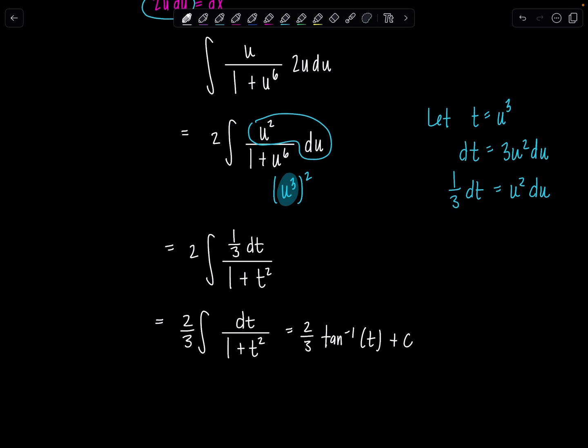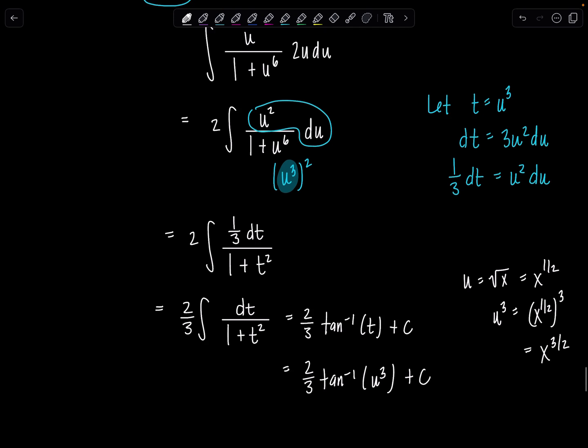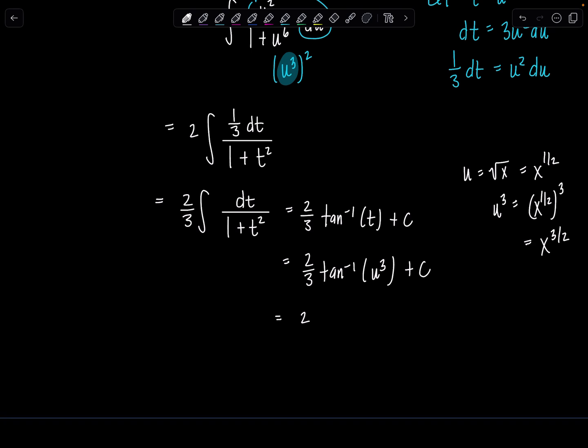And then now we have to go back to the original variable that was in the problem. So t was u cubed. So tan inverse of u cubed plus c. And then u was rad x, which is x to the 1 half power, correct? So u cubed is x to the 1 half cubed, which is x to the 3 halves. So that's how I'm going to write the final answer, just to make it all cute and pleasing. So 2 3rds tan inverse x to the 3 halves plus c. And that's the end of the problem.